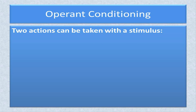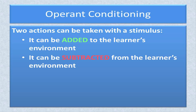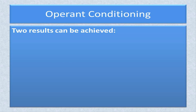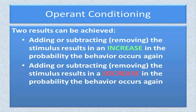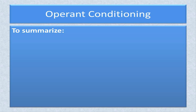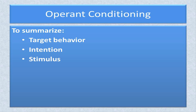There are two actions that can be taken with a stimulus: it can be added to the learner's environment, or it can be subtracted or taken away. There are two results that can be achieved — an increase in the probability that the emitted behavior will occur again, or a decrease in that probability. To summarize, there are five components to using operant conditioning: first, identify a target behavior; second, decide whether that behavior will be increased or decreased from its base rate; third, select a stimulus to modify the behavior; fourth, add or subtract that stimulus after the behavior has been emitted; and fifth, observe the result to see if intentions have been met.